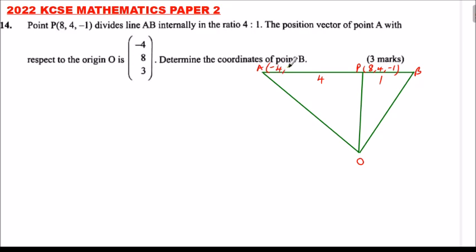So we say it is minus 4, 8, and 3. We don't know the coordinates of B, so X, Y, Z. That is what we want to find out.